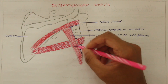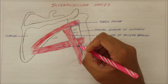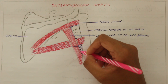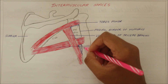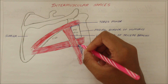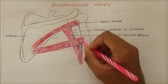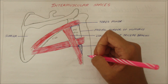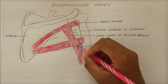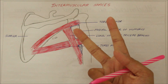Moving on to the lower triangular space, which lies diagonally opposite to the upper triangular space. Its boundaries are: medially, the lateral border of the triceps muscle; laterally, the medial border of the humerus; and superiorly, the lower border of the teres major muscle. The contents of the lower triangular space include the radial nerve and the profunda brachii vessels.